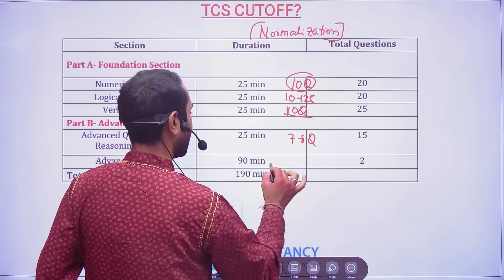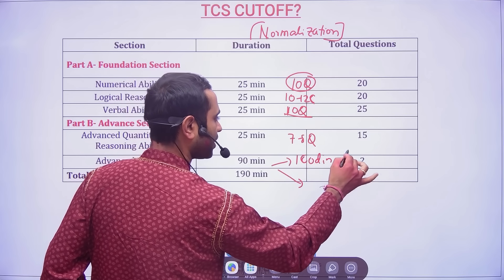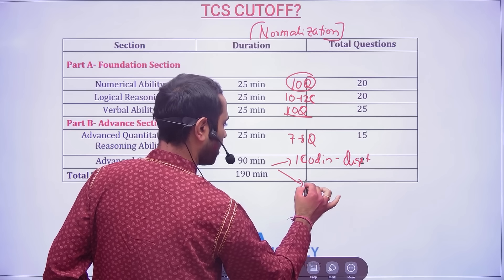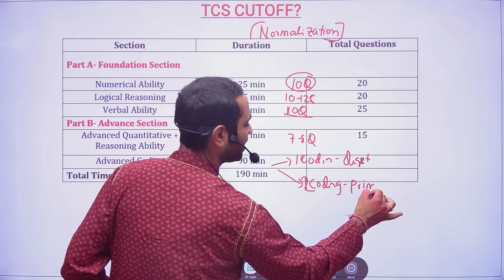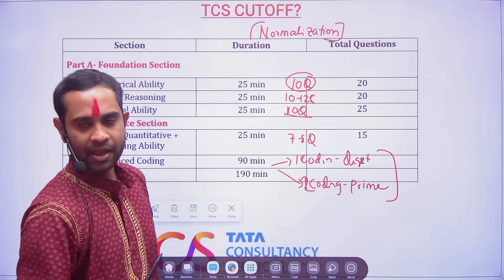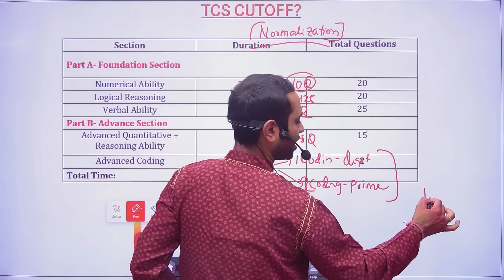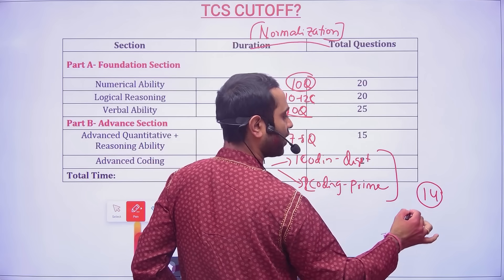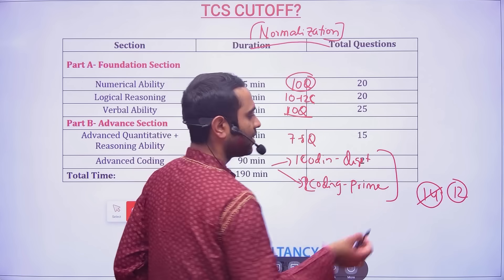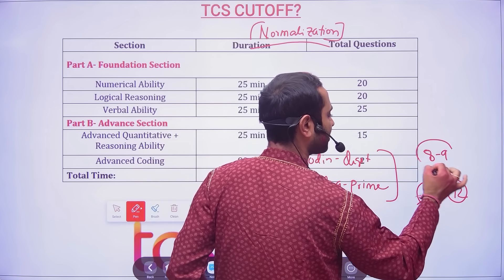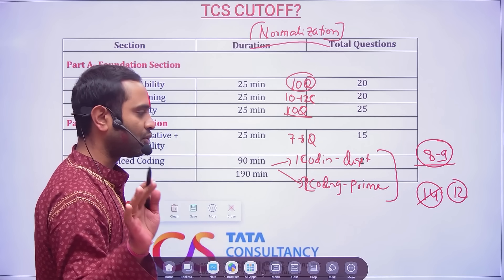If you do one coding question for digital and both coding questions, you will be called for Prime interview. Many people were having compiler issues. With normalization, if there were 14 test cases total and the maximum student got 12, then even if you passed 8 to 9 test cases you may still be called for the Prime interview. So you do not have to worry.